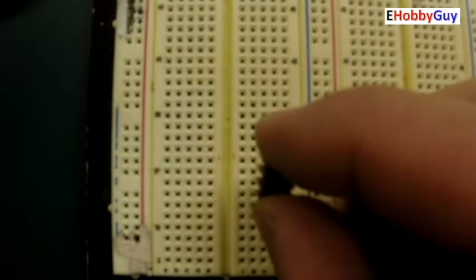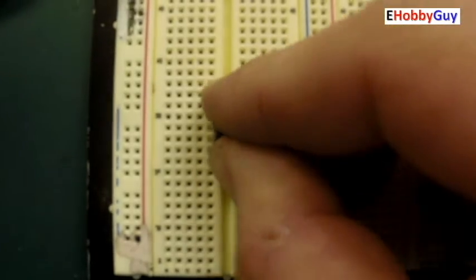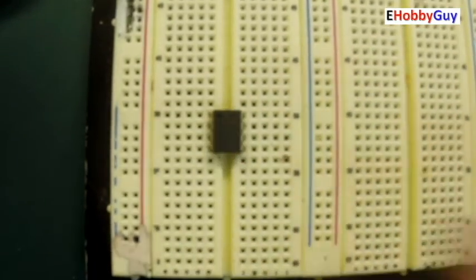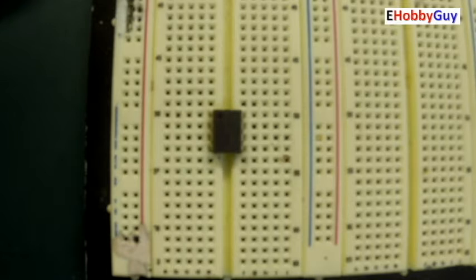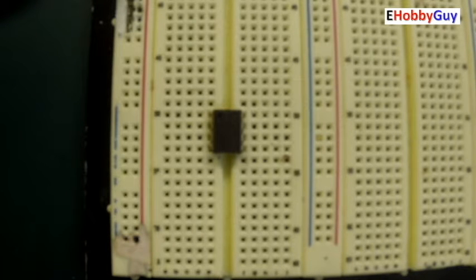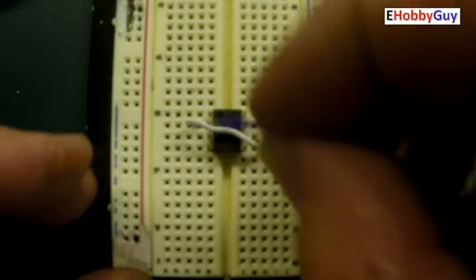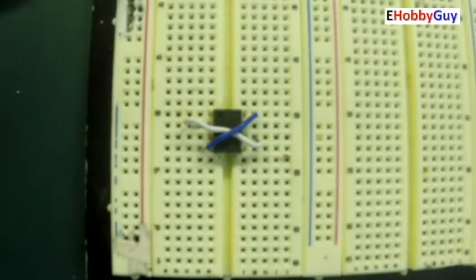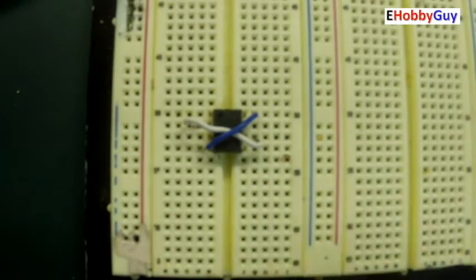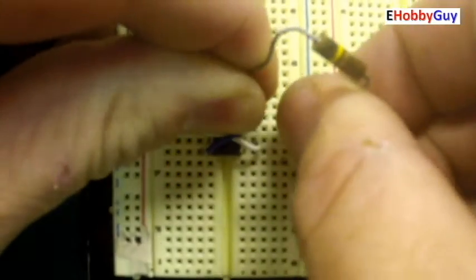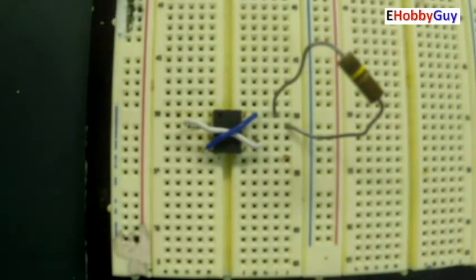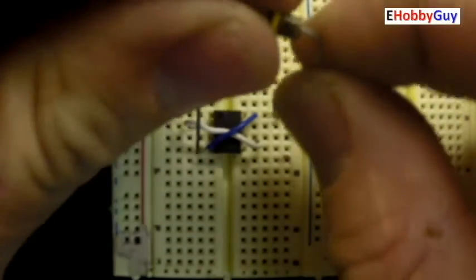To get started building this astable circuit, we'll insert the 555 timer chip into the breadboard, then put a jumper from pins 2 to pin 6, then a jumper between pins 4 and pins 8, a 100k resistor between pin 7 and pin 8, and a 100k resistor between pins 7 and pin 2.